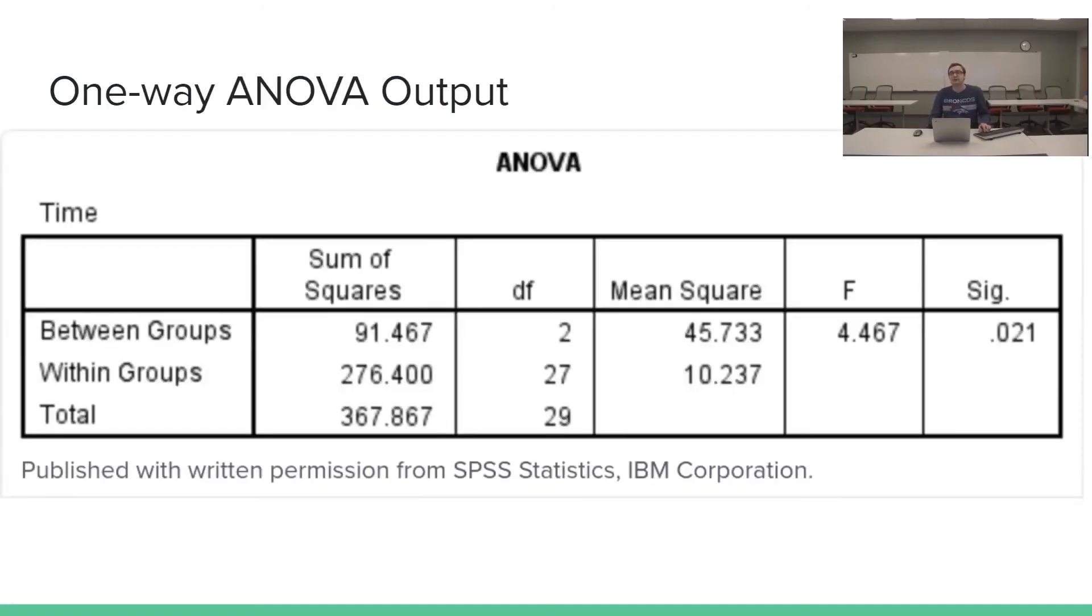Up next we have this one-way ANOVA output. Here we can see we also have this significance level again, this time it being below 0.05, meaning that this is a statistically significant relationship. It's also important to note that when adding multiple variables into this analysis, the most significant independent variable is added into the predictive model at each step of the model. This continues until all significant independent variables have been added. In this way, the predictive model is defined in steps.